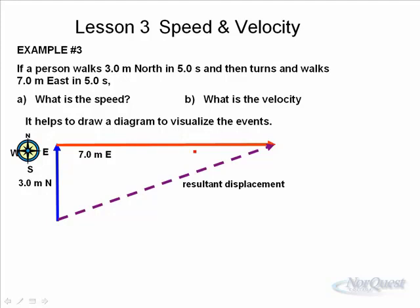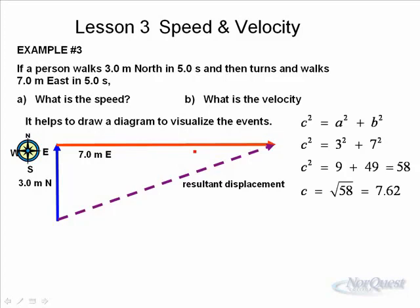What we would have to do is figure out what the length of that hypotenuse is. And using some simple Pythagoras, c squared equals a squared plus b squared. We get three squared plus seven squared.